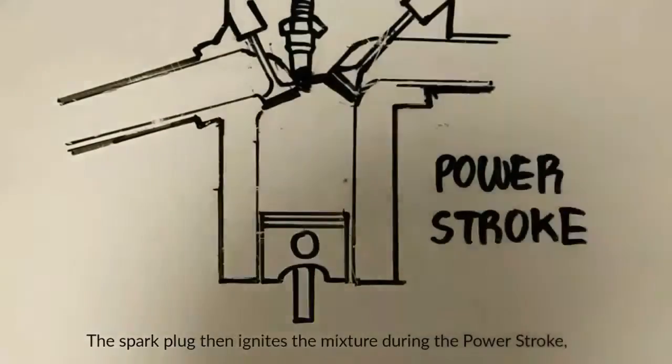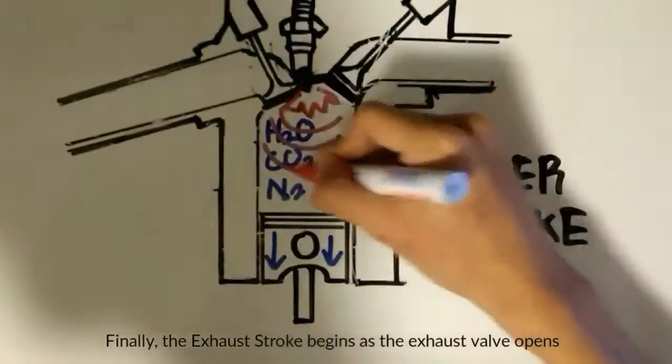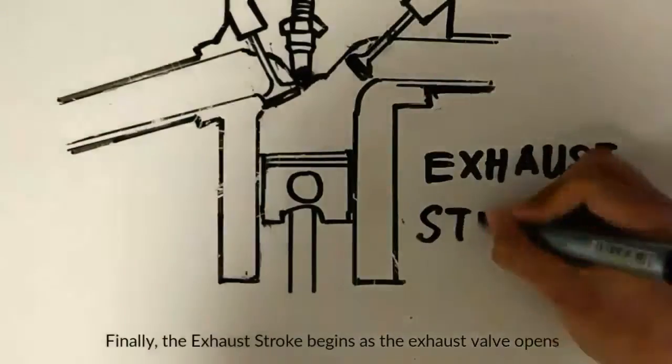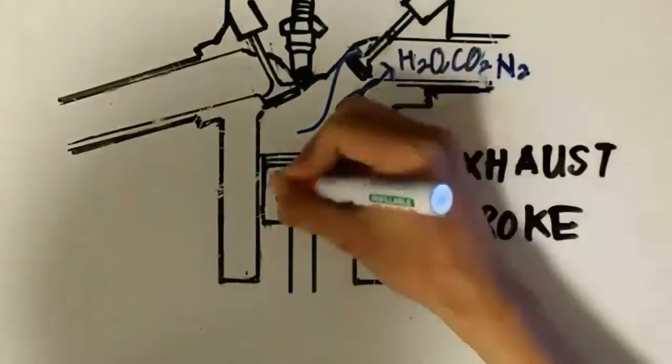The spark plug then ignites the mixture in the power stroke, causing a flame to begin. Finally, during the exhaust stroke, the exhaust valve opens and the products of the combustion are expelled.